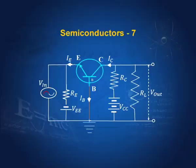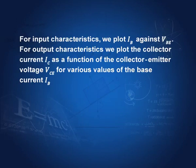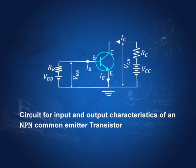But before that, we must learn of the characteristics of a transistor. For the input characteristics, we plot IB against VBE. IB is the current going to the base — it is the emitter-base current. IC is the current going through the collector — it is the emitter-collector current. VBE is the bias between the base and the emitter. So we plot IB against VBE, the current against the voltage between the base and emitter. These are the input characteristics.